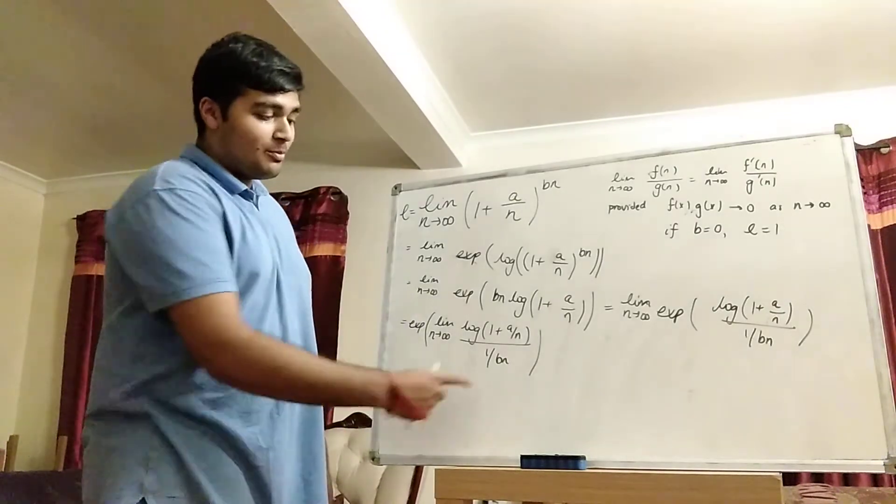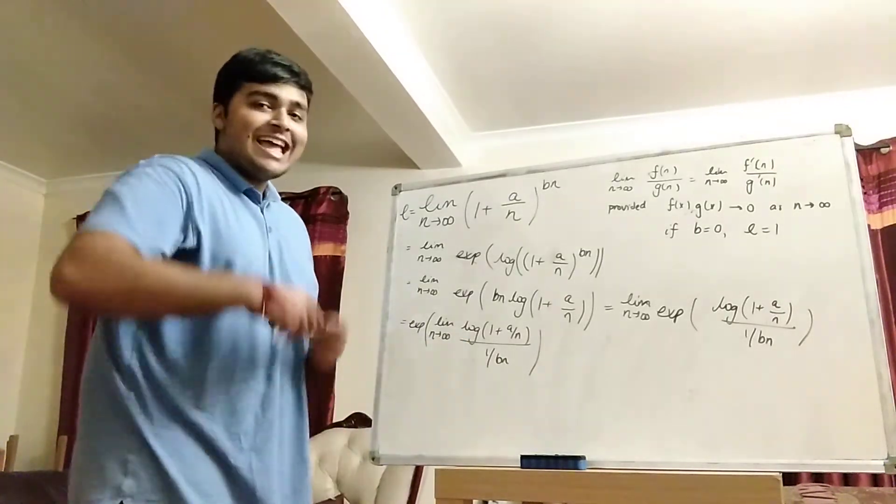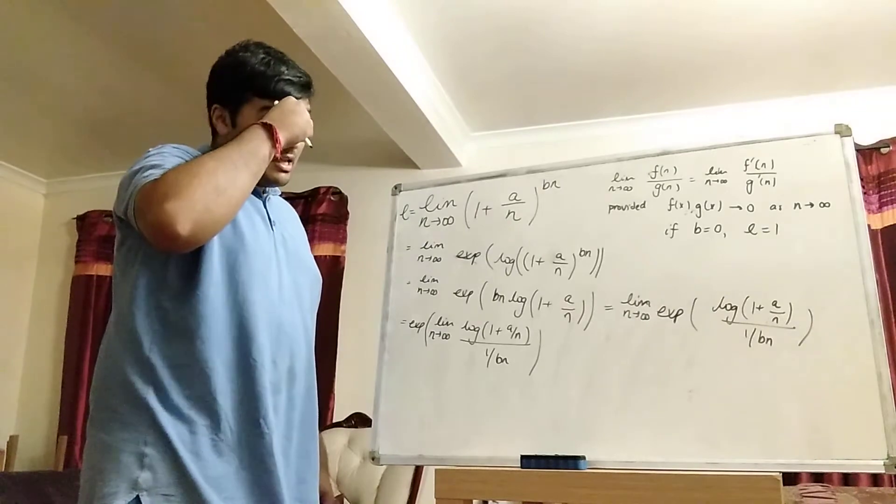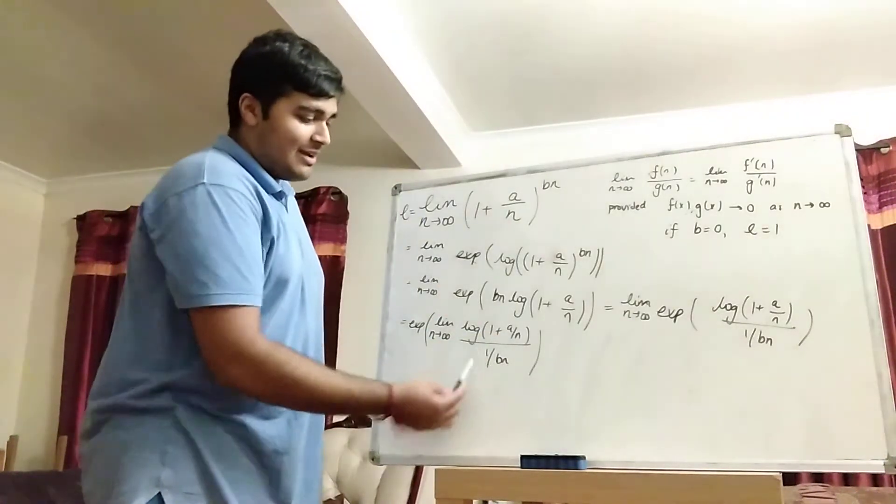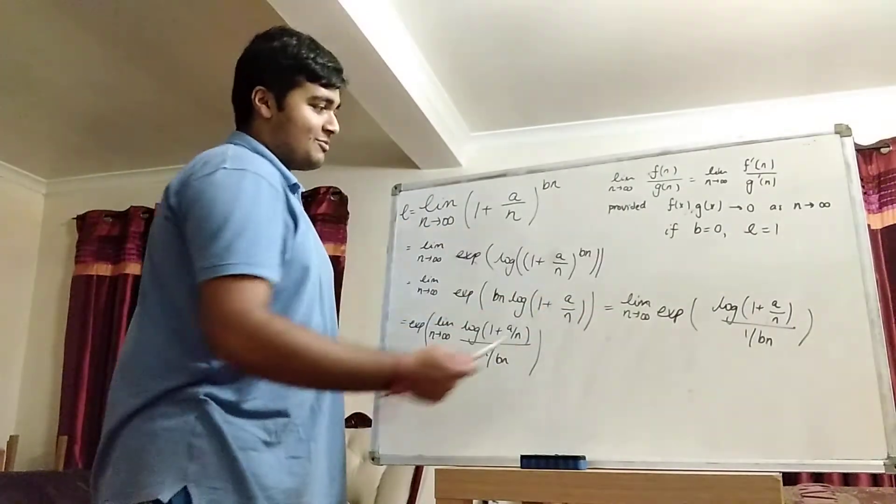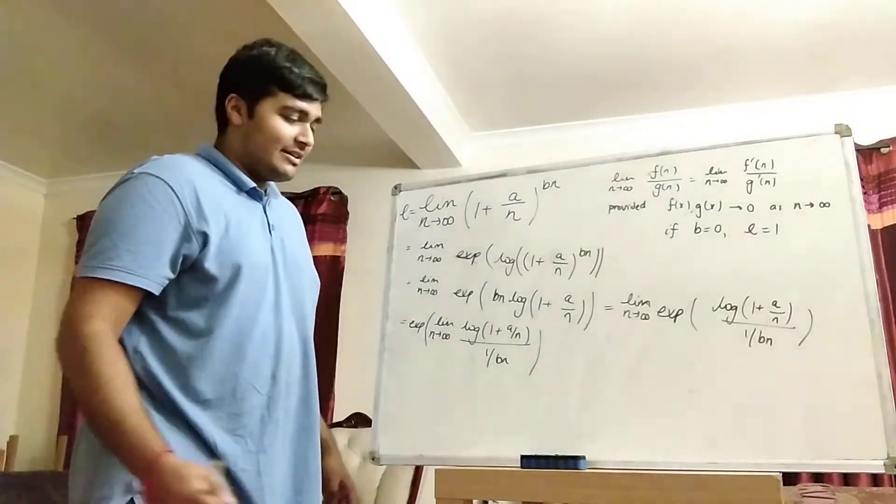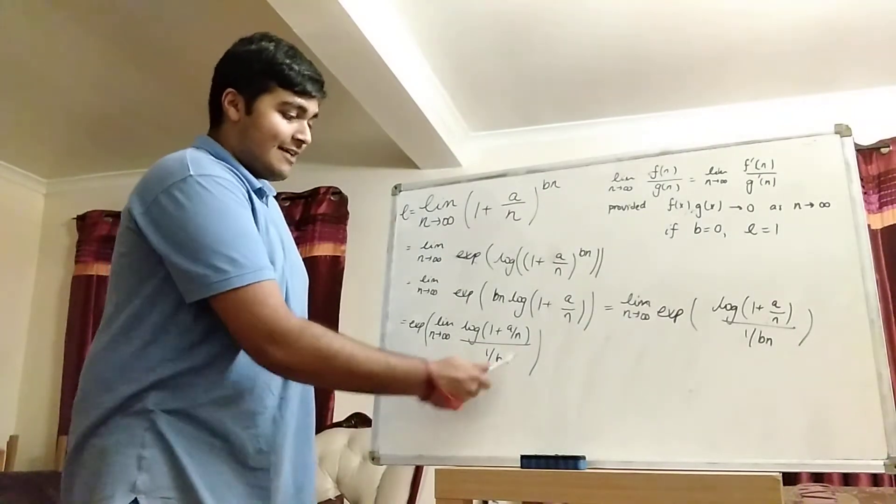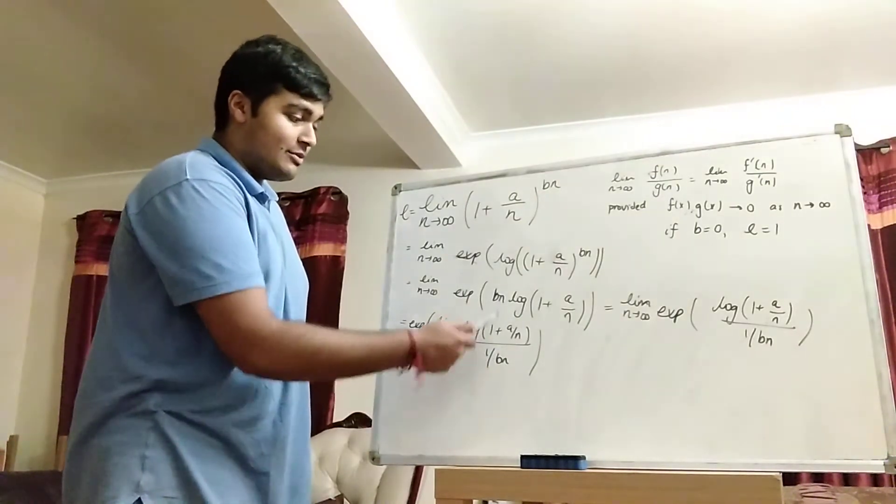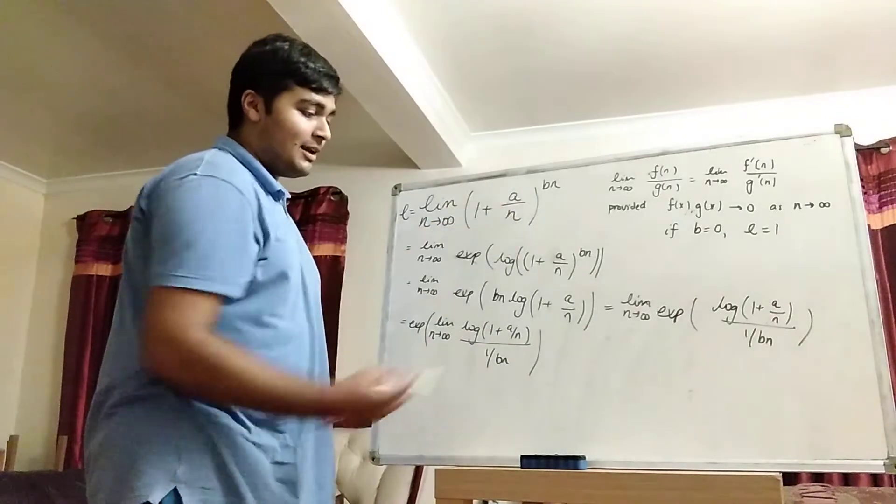So on the top, we've got 0. And on the bottom, we've got 1 divided by bn. And again, as n gets bigger and bigger, this denominator here will go to 0. And one thing to note is that we're allowed to do 1 divided by bn. Because remember, we already considered the case where b equals 0. So here, our argument is for b non-zero. And thus, this thing here is going to 0. Top and bottom are going to 0. So we can apply L'Hopital's rule.